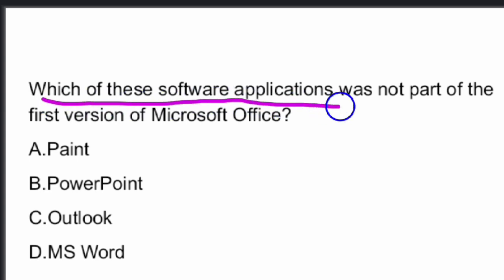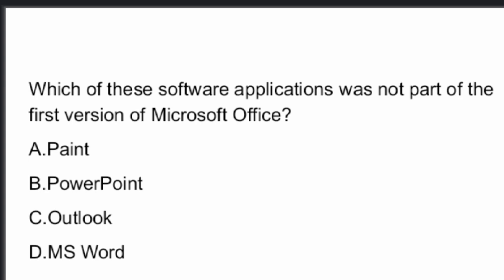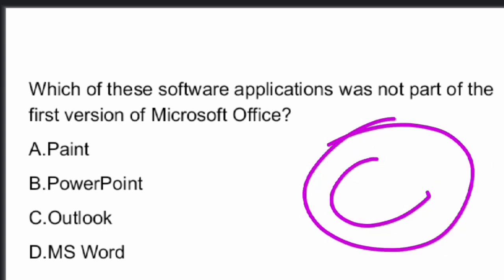Next question: Which of these software applications was not part of the first version of Microsoft Office? The answer is Option C — Outlook. Outlook software was not part of the first version of MS Office.